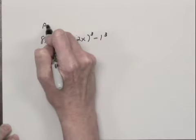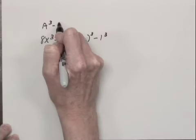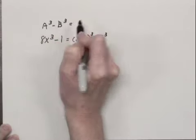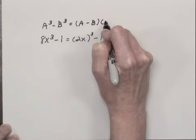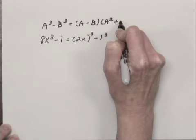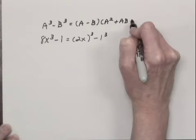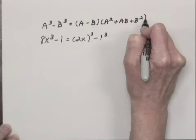Now we know that if we have A³ - B³, the factorization is (A - B)(A² + AB + B²).